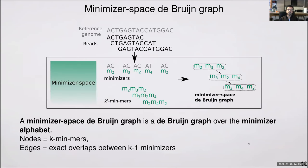Once you just change this alphabet, it's pretty much straightforward to end up with MDBGs. You can think in minimizer space and extract minimizers on reads, then extract k-mers over minimizers, which are k-minimizers. I'm using k-prime here just to say that you don't have to use the same k-value as De Bruijn graphs. In fact, k-prime is typically a smaller value than k. Then MDBG is the De Bruijn graph over the minimizer alphabet, where nodes are k-minimizers and edges are exact overlap between k-minimizers.